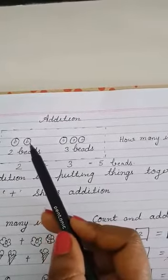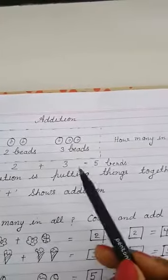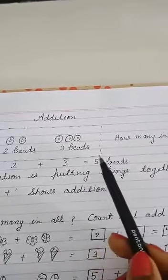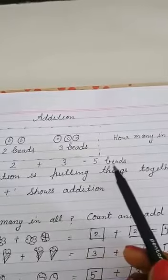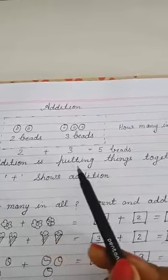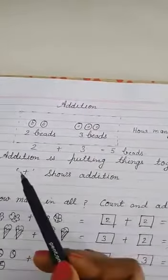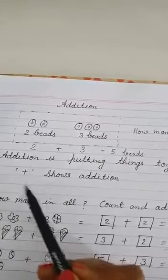One, two, three, four, five. So total five beads in all. So addition is putting things together and this shows addition.